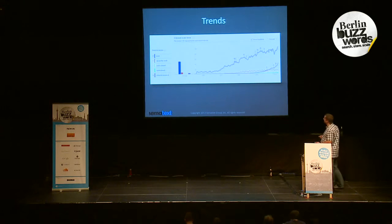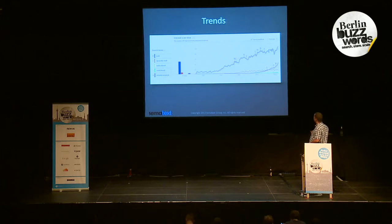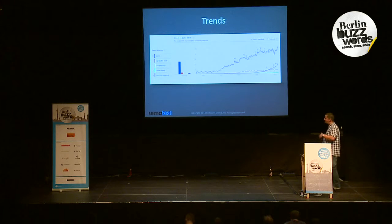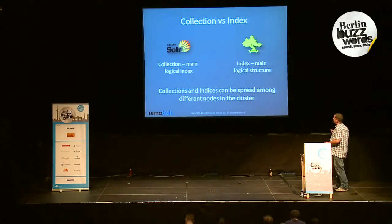You can see that Solr is more mature — it was released earlier than Elasticsearch. And you can see the top line, which is showing the Google Trends. Elasticsearch is going higher and higher as more people search about it, and more people try to get it, and more people are interested in it.